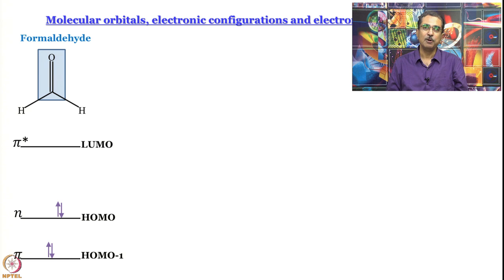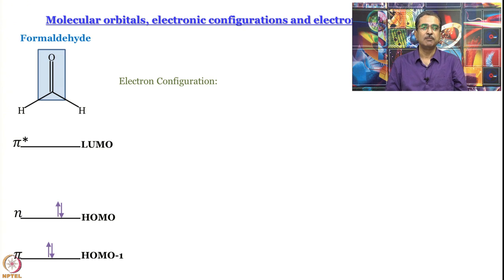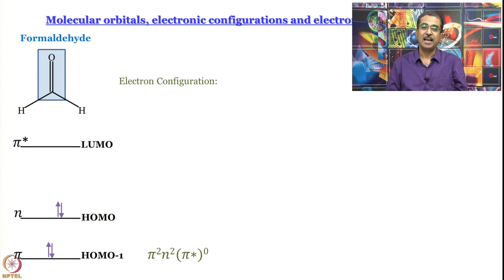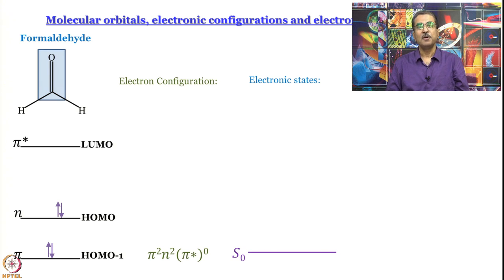Our transitions are going to involve these occupied and unoccupied molecular orbitals. The electron configuration for this ground state — 2 electrons in pi and 2 electrons in n — is pi², n², pi*⁰. This ground electronic state is called the S0 state: 0 because it is the ground state, and S because it is a singlet state.